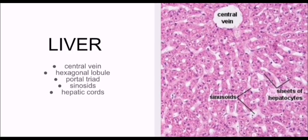In between the hepatocytes you can see white spaces — these are known as sinusoids. The sinusoids will contain blood, and the exchange between the cells and the blood will occur there.